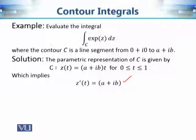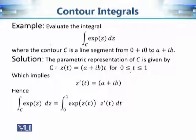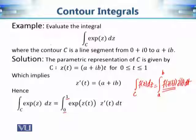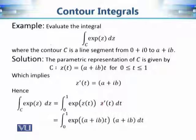Now let's evaluate the contour integral. The limits of t are 0 to 1, so we have the integral from 0 to 1 of f(z(t)) · z'(t) dt. Substituting: f(z(t)) = e^(z(t)) = e^((a+ib)t), and z'(t) = a + ib. So the integral becomes the integral from 0 to 1 of e^((a+ib)t) · (a + ib) dt.